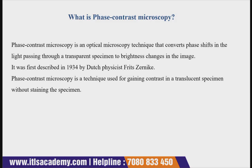The next type of microscope is the phase contrast microscope. The Dutch physicist Fritz Zernike was the scientist who first invented this type of microscope. Phase contrast microscopy is an optical microscopy technique that converts the phase shift in the light passing through a transparent specimen into brightness changes in the image. It is used for gaining contrast in translucent specimens without staining them.